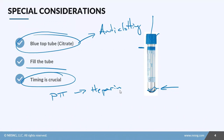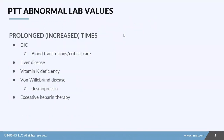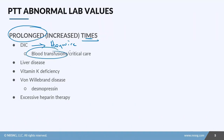An abnormal PTT value that is elevated is called a prolonged or increased time. You'll see this with patients who have DIC — disseminated intravascular coagulation — where the clotting system goes haywire. Treatment includes blood products, IV fluids, and platelets. These patients will likely go to critical care because they can deteriorate rapidly and need careful observation.